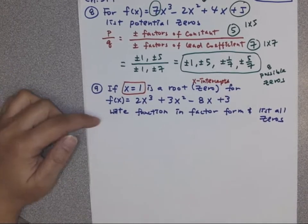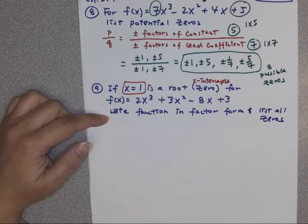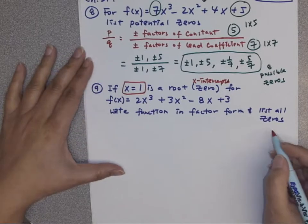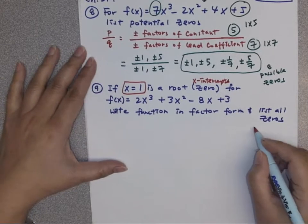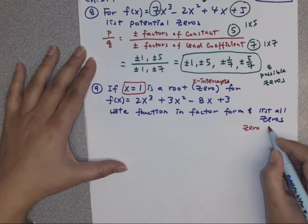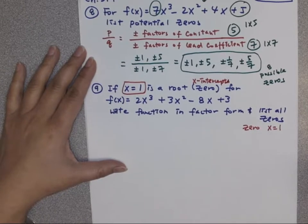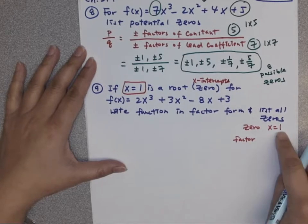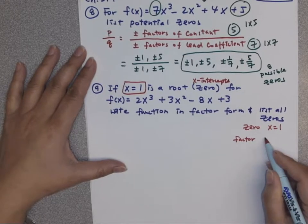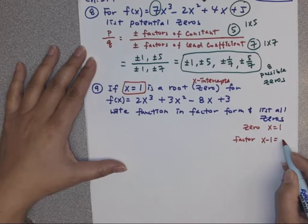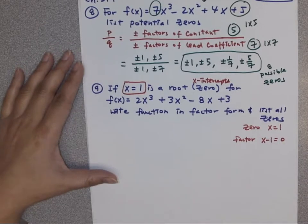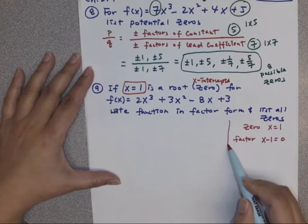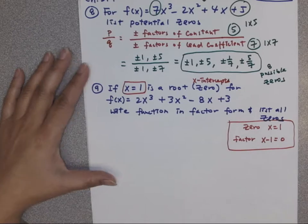For this function, we want to write the function in factor form and list all the zeros. So we know one of the zeros. One of the zeros is x equal to 1. And then if I turn that back to factor, it will move the 1 to the left-hand side, so it's going to be x minus 1 equal to 0. So if you don't know how to do anything else, you should at least give me back one zero and one factor. That's what we know.